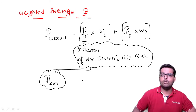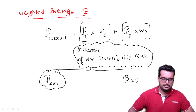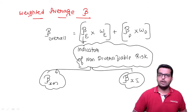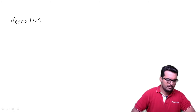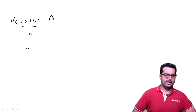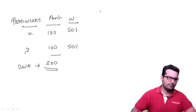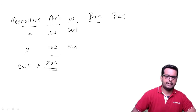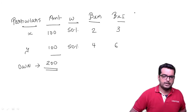Beta XM is one example of non-diversifiable risk — for every 1% change in the market, what is the change happening in the security? Beta XI is another non-diversifiable risk — for every 1% change in inflation, what is the change in the security? I will draw a table. Particulars X and Y. The amount invested in both securities is 100 lakhs each, so total is 200 lakhs. Weights are 50% each. Suppose beta XM is 2 and 4, and beta XI is 3 and 6.